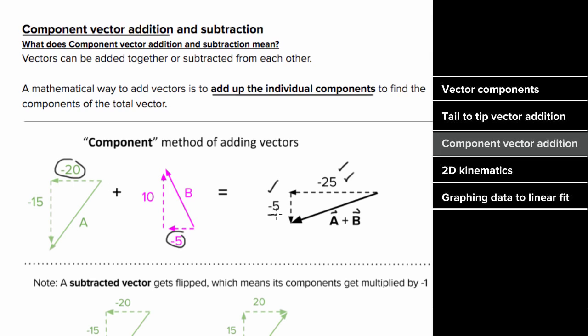To find the total vertical component of vector a plus b, add the vertical component of a, which is negative 15, to the vertical component of b, which is 10, to get negative five.